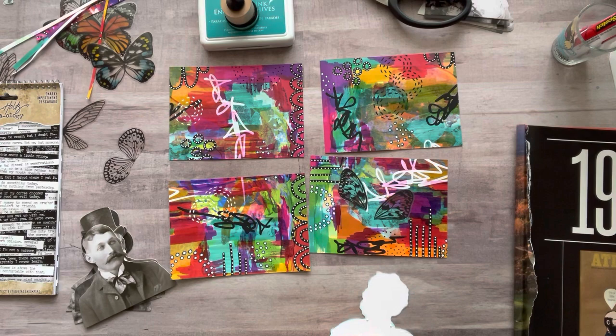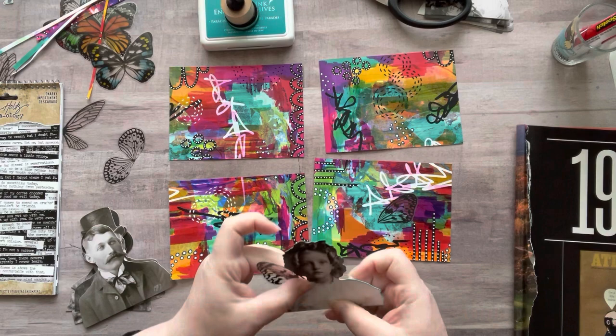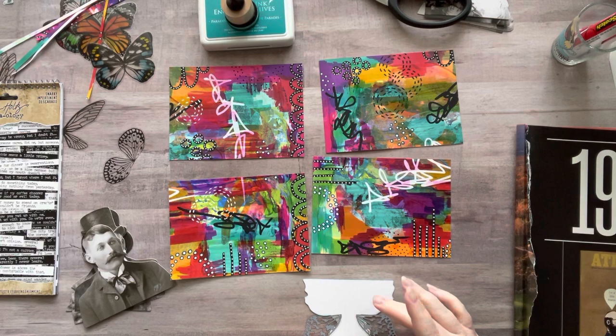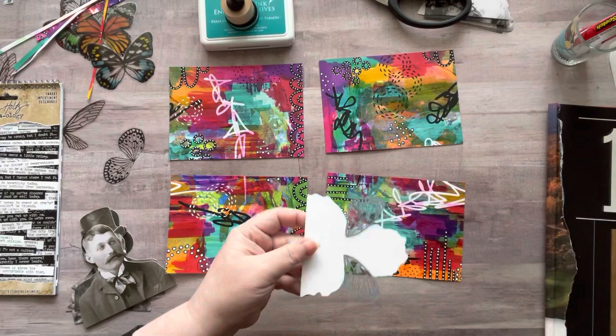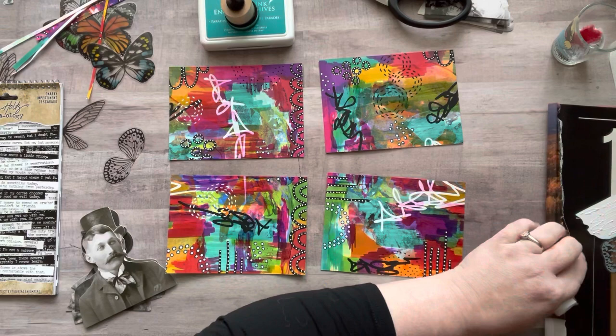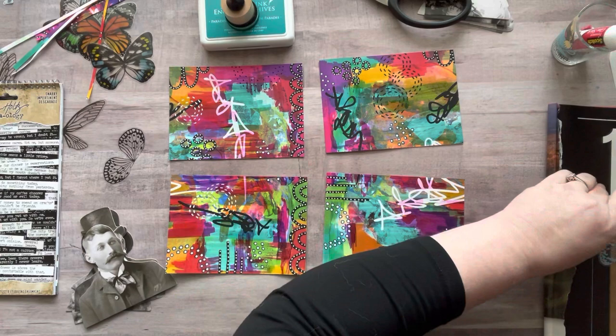So what I'm using to embellish all four of these are some Tim Holtz transparent wings. These were gifted to me by my friend Melissa a couple years ago, as well as the Tim Holtz paper dolls. These are the bigger paper dolls and I wanted them so bad. I mentioned it and then boom, they showed up on my doorstep by Melissa. Mel, you're the best, you just spoil me rotten.